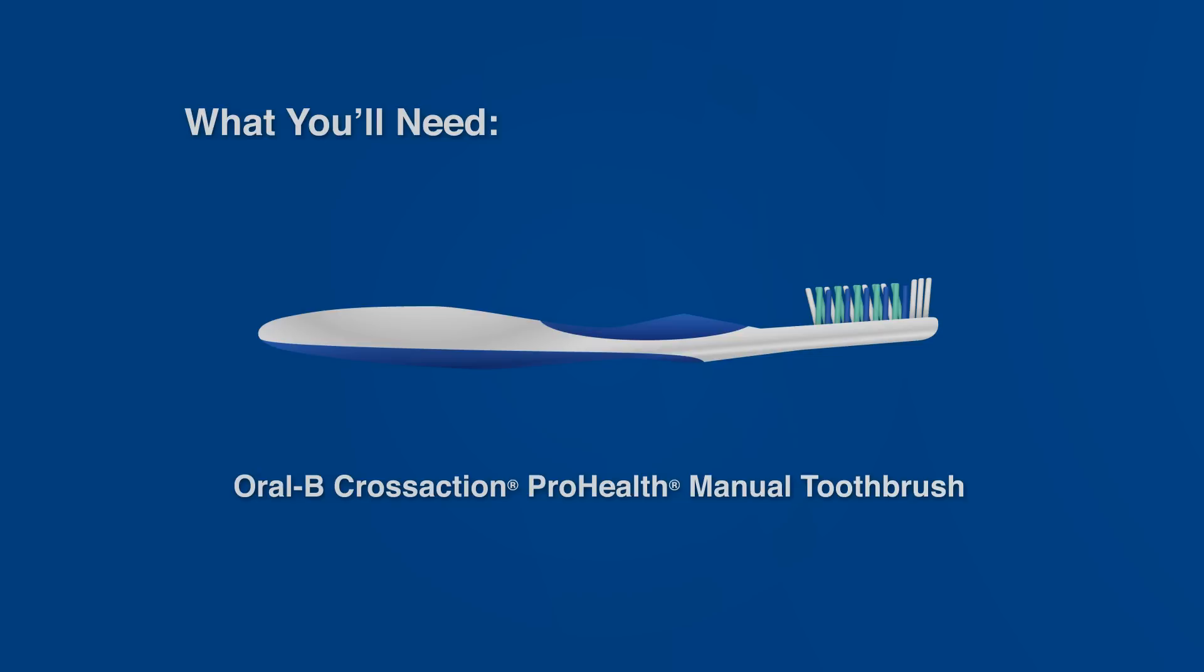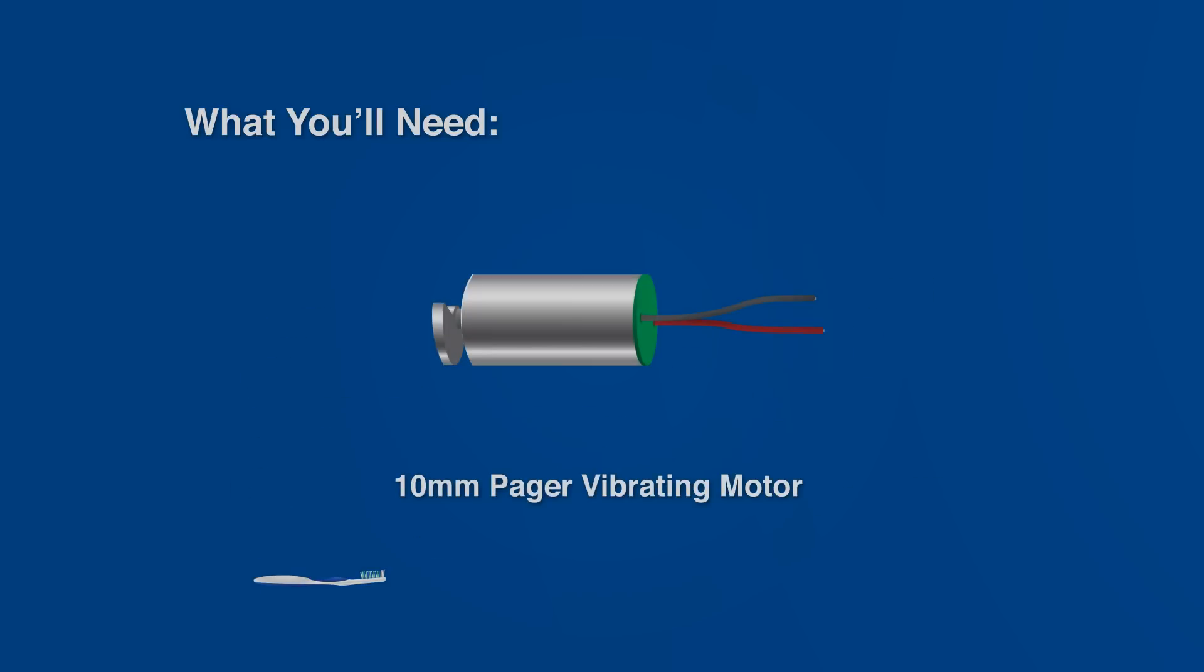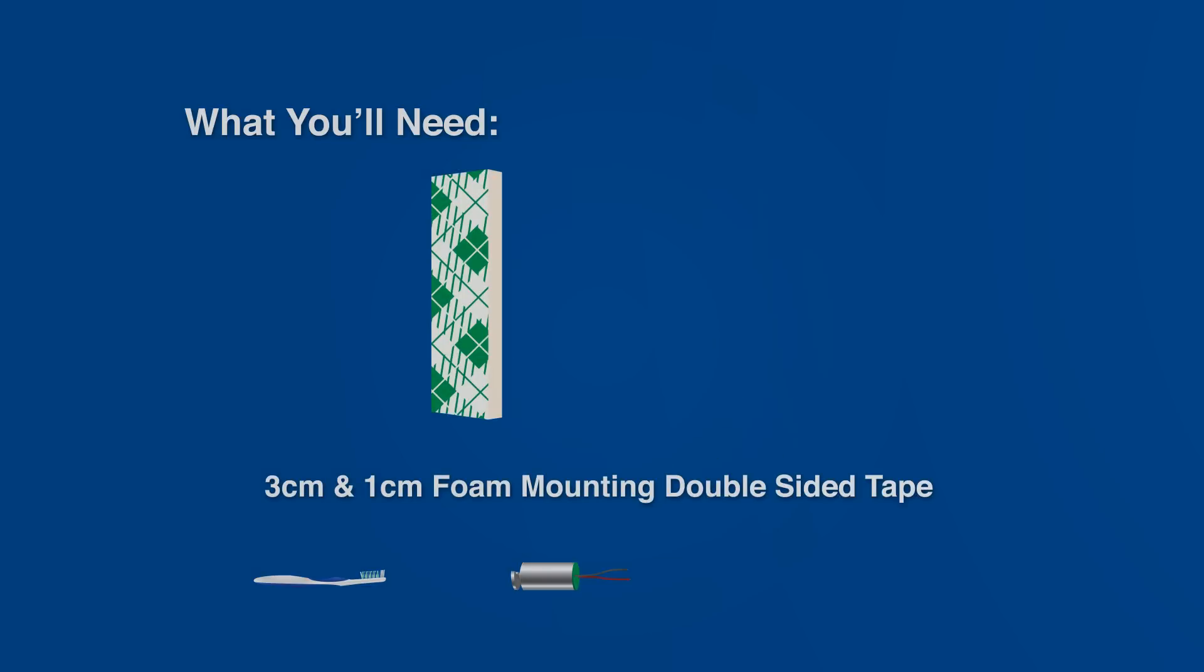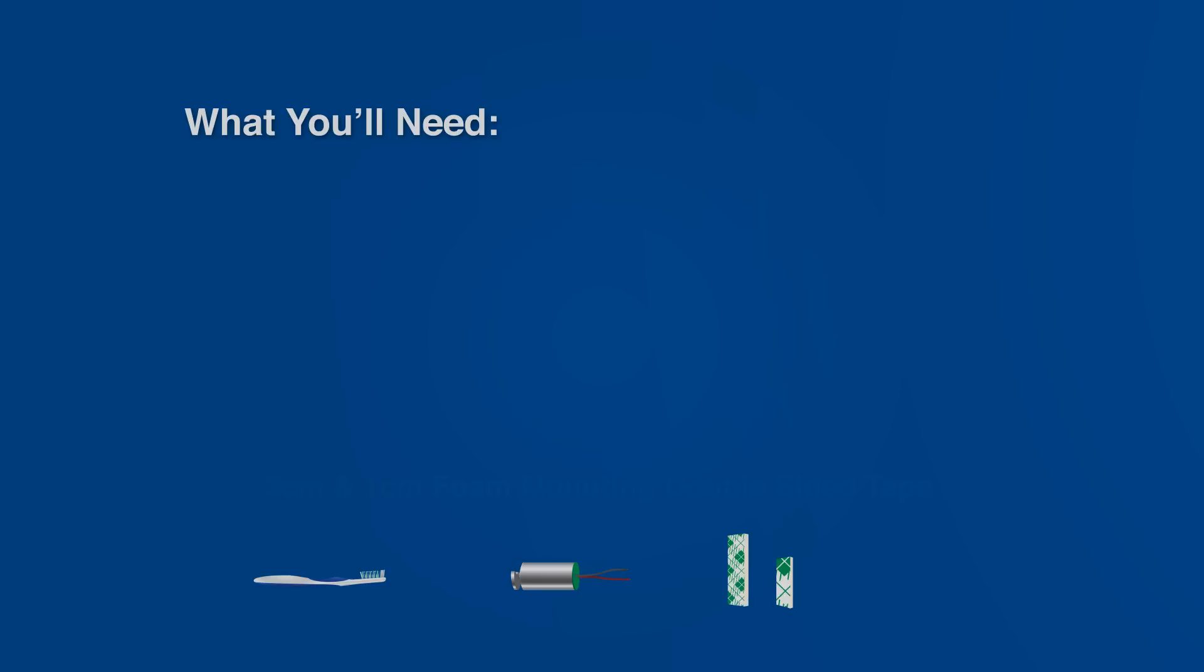One Oral-B Cross-Action ProHealth Manual Toothbrush, a 10mm pager vibrating motor, a 3cm and a 1cm piece of foam mounting double-sided tape, and a LR44 1.5V button cell watch battery.